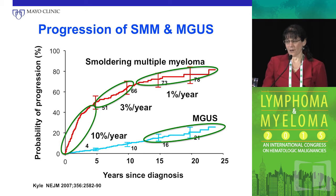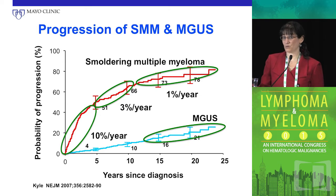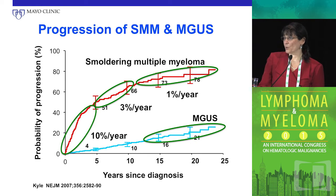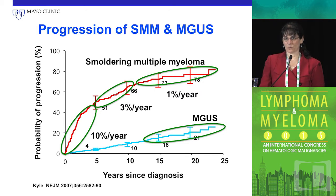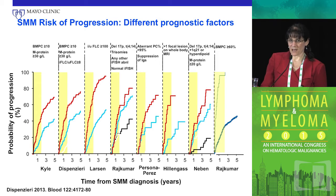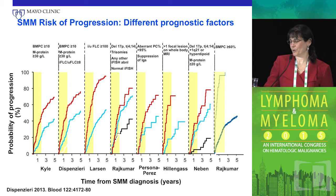The idea emerged that perhaps we can pull patients out of the smoldering category who are at the highest risk and just call them myeloma. About five years ago, the IMWG asked: what if we could find risk factors predicting that within two years, seventy or eighty percent of patients would progress? Perhaps we shouldn't call those patients smoldering myeloma, but actually reclassify them.